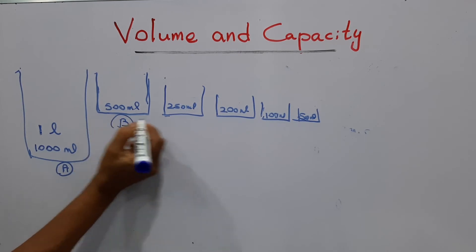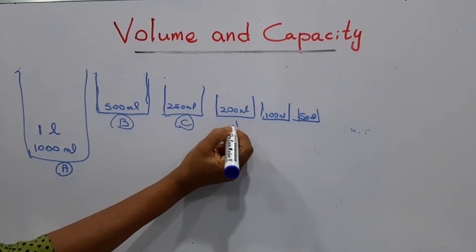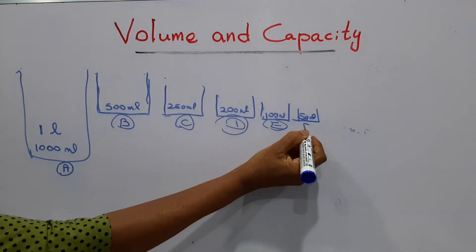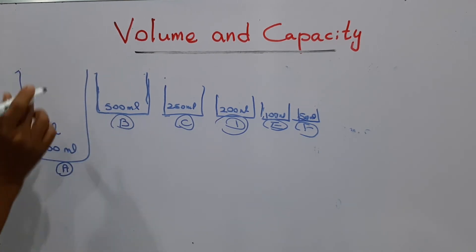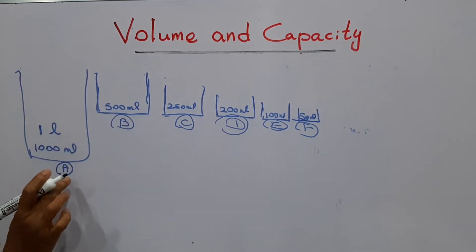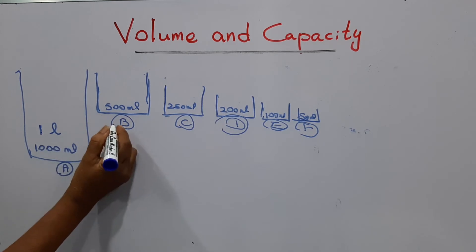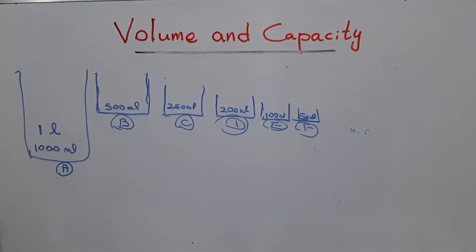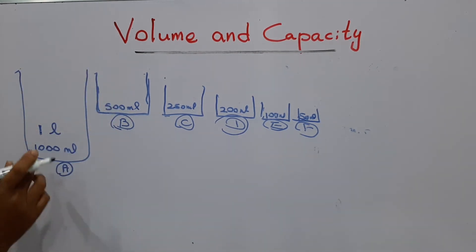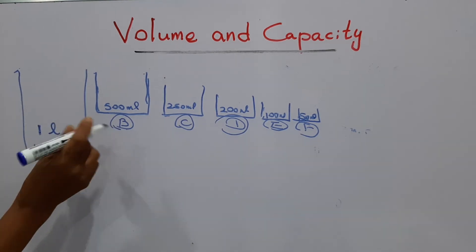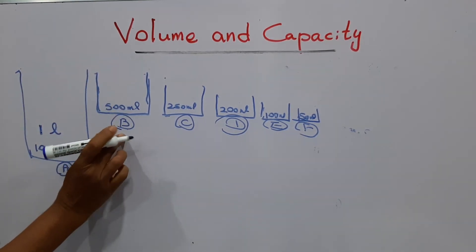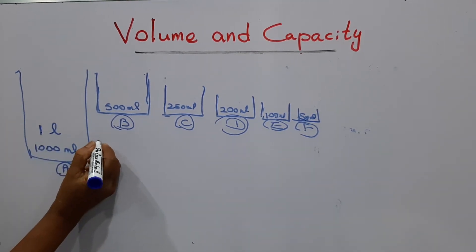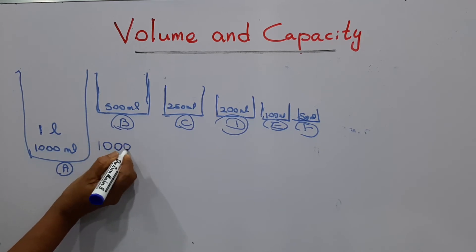We will name these containers A, B, C, D, E, and F. We are going to fill the A container. The capacity of the A container is one thousand milliliters. My question is: how many times do we have to use the B container to fill the A container? The capacity of A is one thousand milliliters.